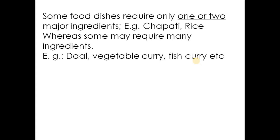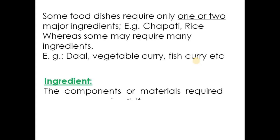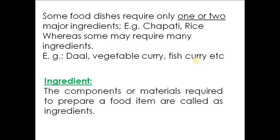Whereas some dishes may require more than one ingredient — like dal, fish curry, and vegetable curry. So how do we define these ingredients? Ingredients are the components or materials required to prepare a particular food item.